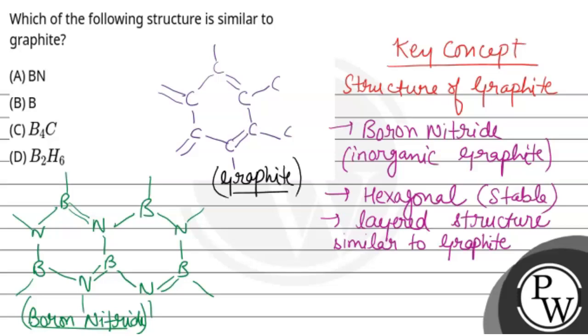So graphite and boron nitride have similar structures - layered structure. Here we are talking about similar structure to graphite, so the final answer is A, that is boron nitride. The answer is A. Hope you understand it well, best of luck.